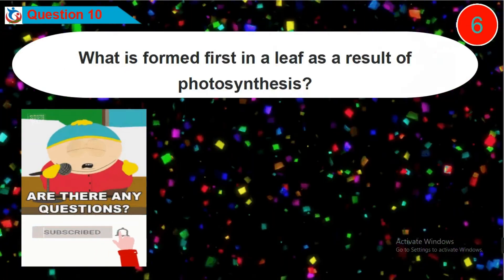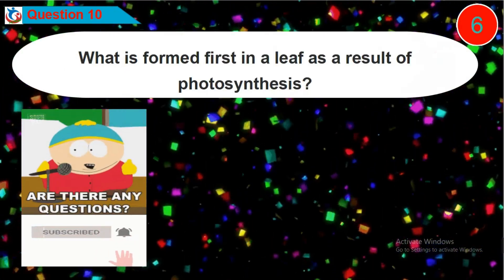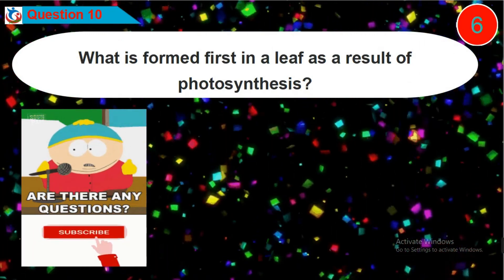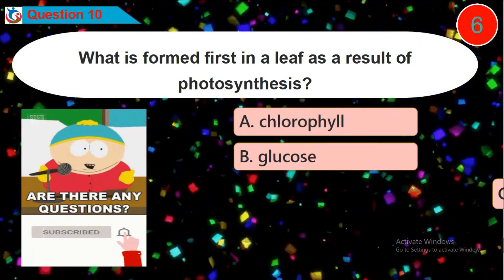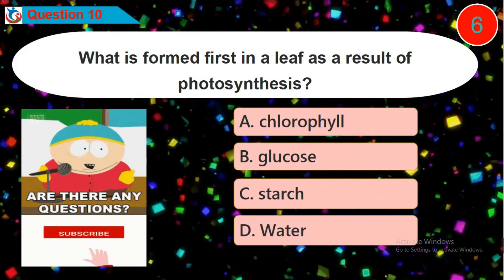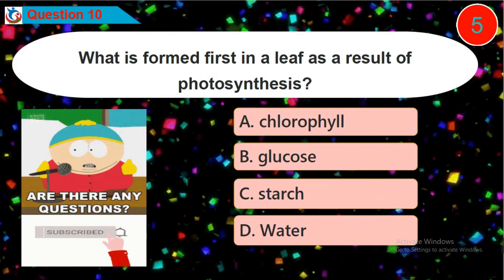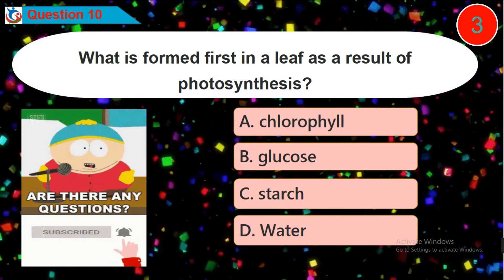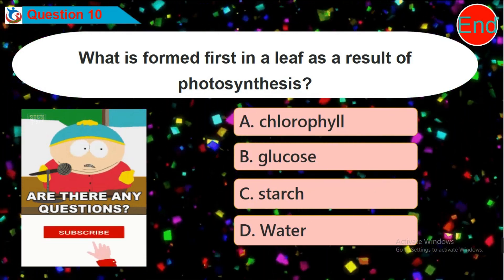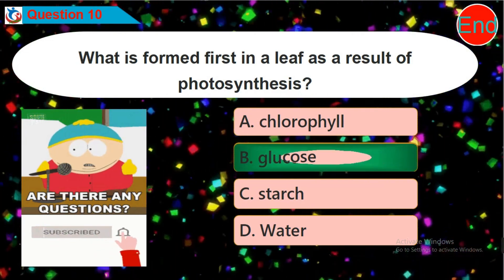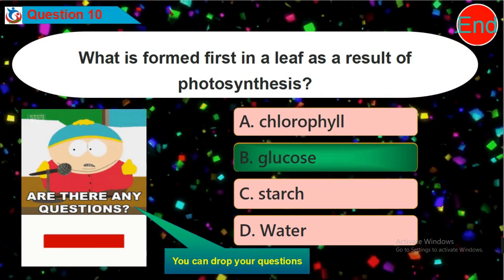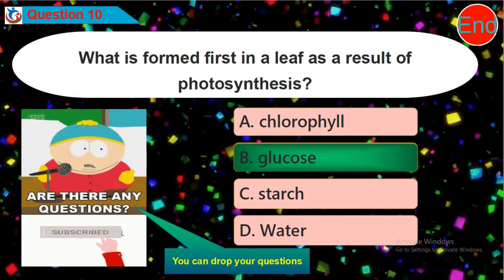Question ten: what is formed first in a leaf as a result of photosynthesis? Is it option A, B, C, or D? Please like this video, subscribe to this channel, and click the bell button — it's totally free.